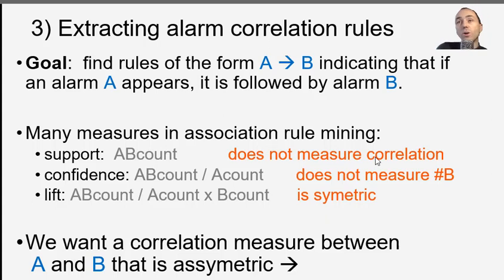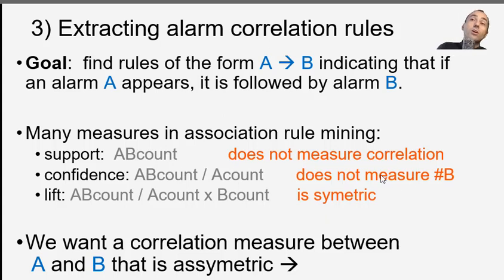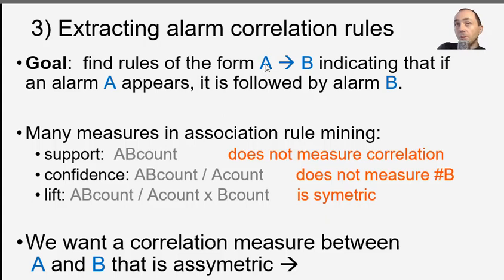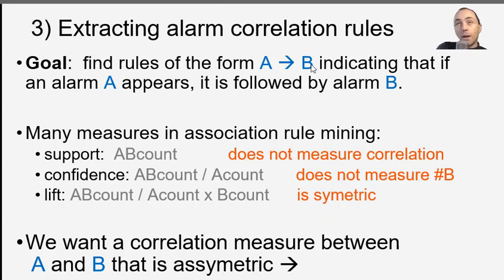There are some problems with these measures. With support, A and B might just appear together by chance or because A always appears, so support is not a good measure. With confidence, it does not properly account for how often B appears alone. For lift, one problem is that the measure is symmetric — the rule 'A implies B' and 'B implies A' will always have the same lift. But in our project we want an asymmetric correlation measure: we want to know if 'A implies B' and 'B implies A' are different, because they are not the same thing.